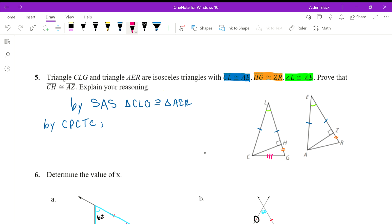CG is congruent to AR. We also know from this angle right here that angle G is congruent to angle R.